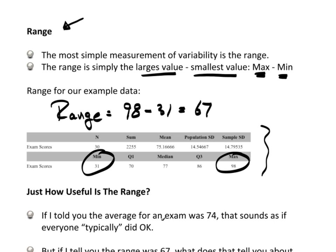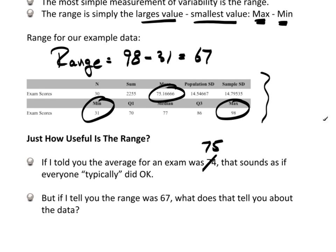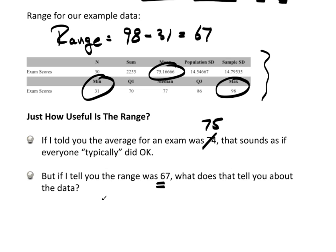So how is the range useful? Let's just say the average for an exam was 75. That sounds like typically everybody did really quite okay. But if I tell you that the range was 67, what additional information does that give you? Well, if the range is actually 67, and suppose I had somebody max it out and get 98. If this was actually the maximum value, somebody really got a score that high, and I know the range is 67, well 98 minus 67 is 31. I know somebody really had a bad day.